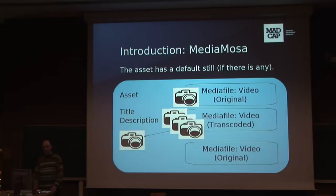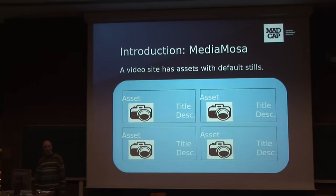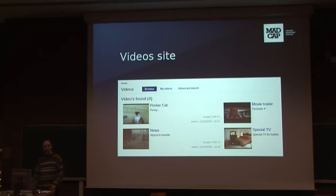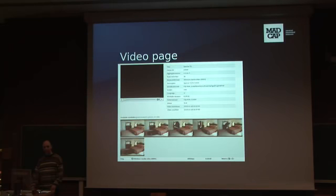Let's see why it is good. This is an example video site — you see assets with the default still images and metadata, and this is a video page which has a video object. This is a real application — this is the White Label EHA. You see four assets here with the default still images. And this is one of the video pages — you see a lot of still images and a lot of metadata. You can decide what you put on your video frontend.